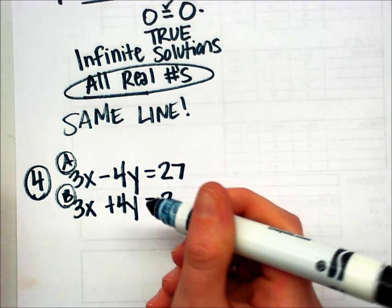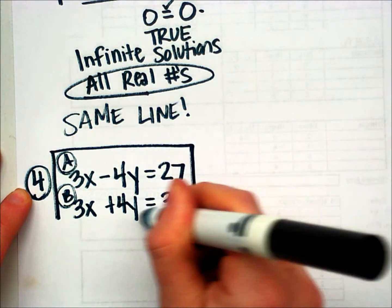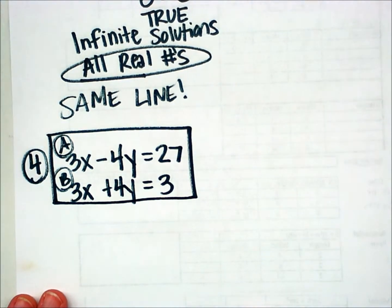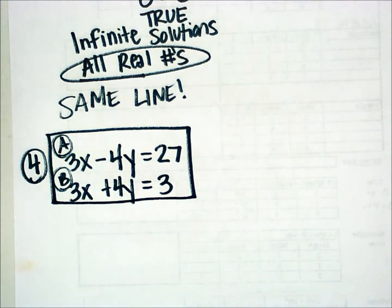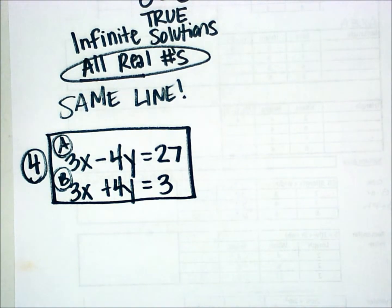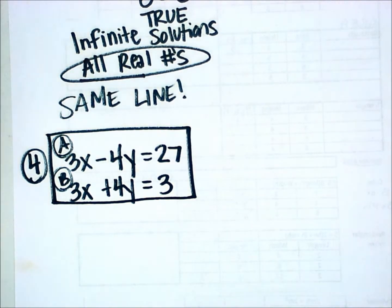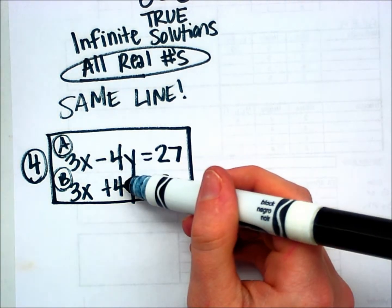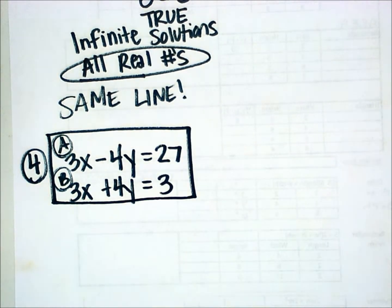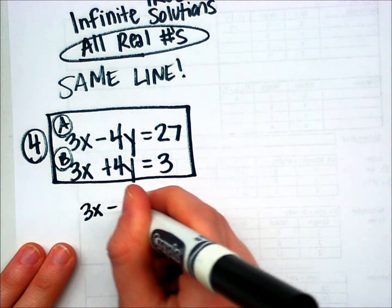Sometimes you get a problem that is just way easy, and this is one of those problems. Elimination is definitely the method I would use for number 4. Remember, I'm trying to add these two equations together so that either the x's or the y's cancel out. Looking at this one, I see immediately the coefficients of y: negative 4 and positive 4. If I add those two, that would be 0y, meaning the y's would cancel out. So I don't even have to multiply in this instance.